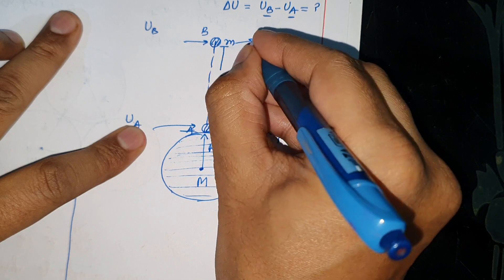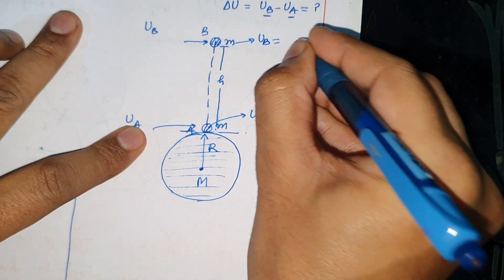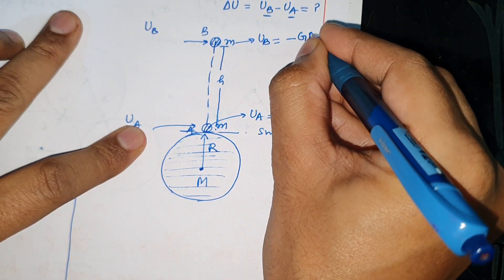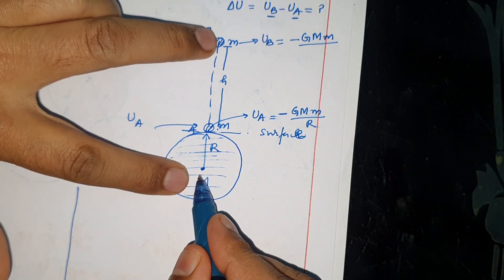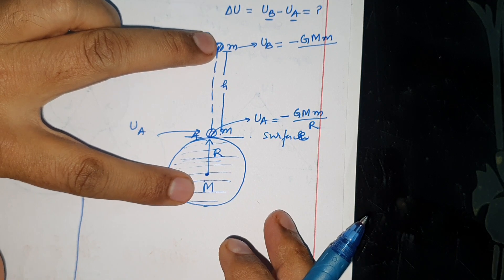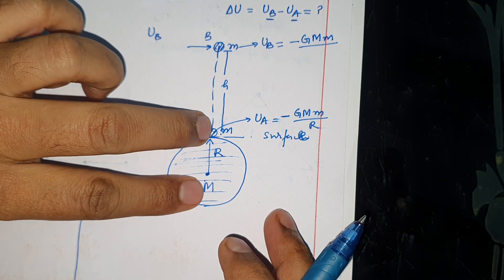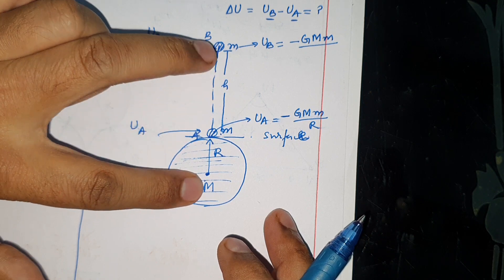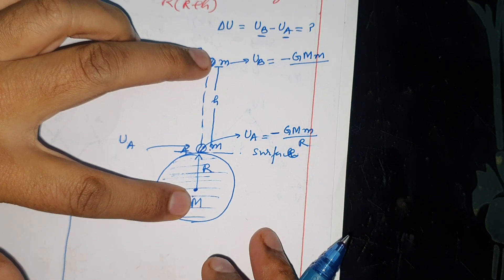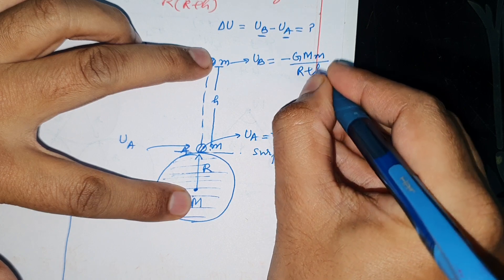And if we calculate Ub at this point, the formula will be minus G capital M small m over the separation between capital M and small m. The separation I wrote before was R, now the object has reached here so the separation is R plus h.